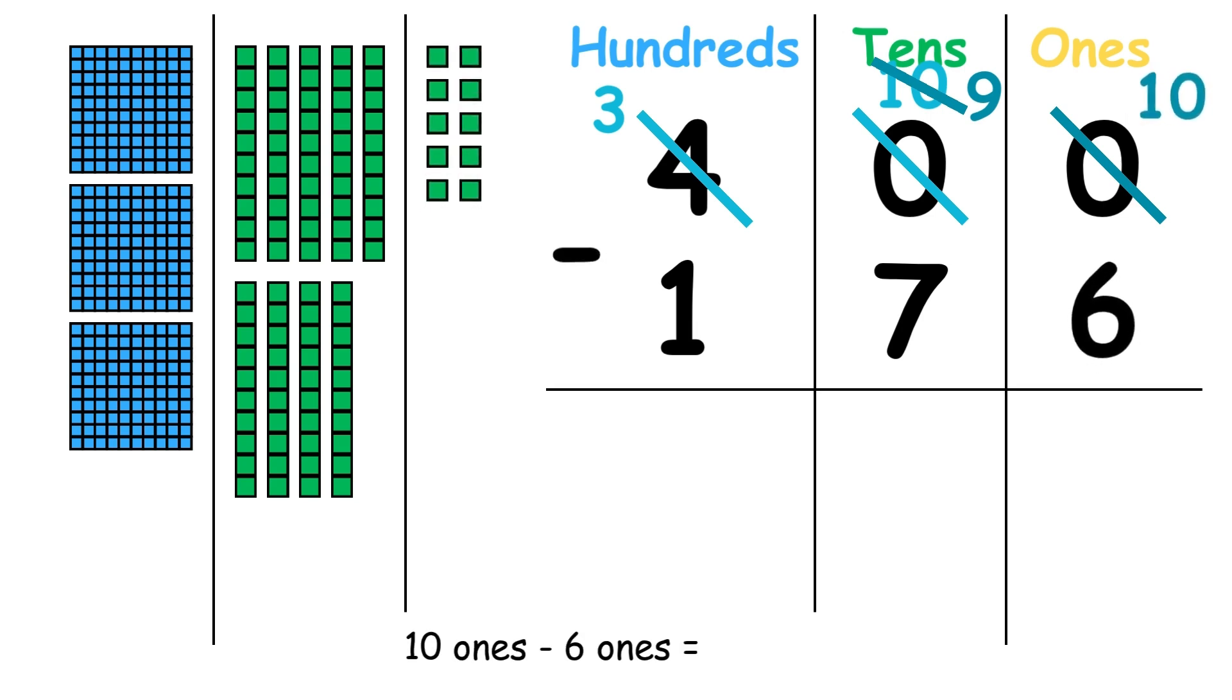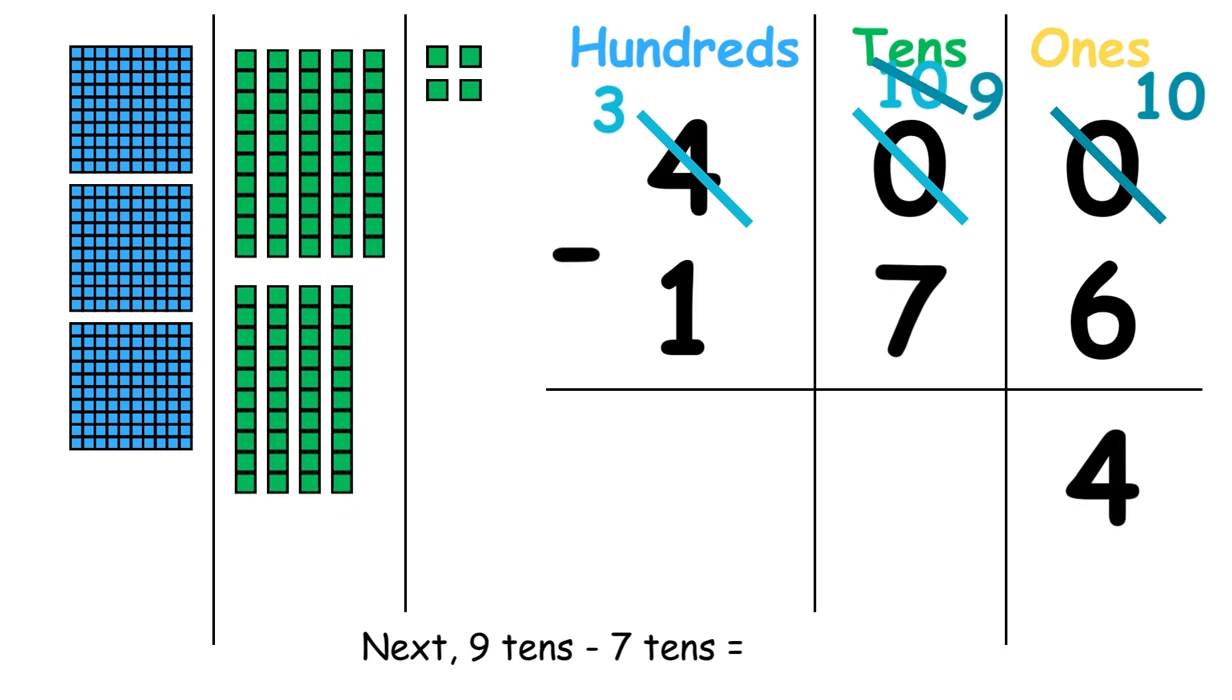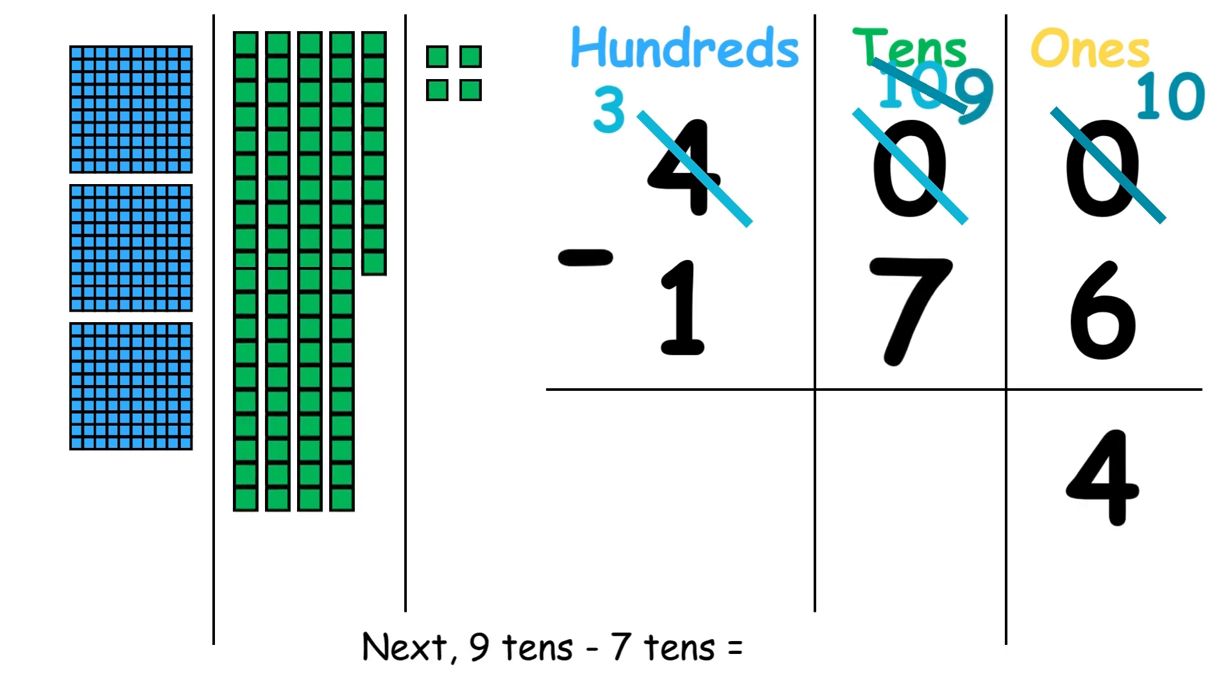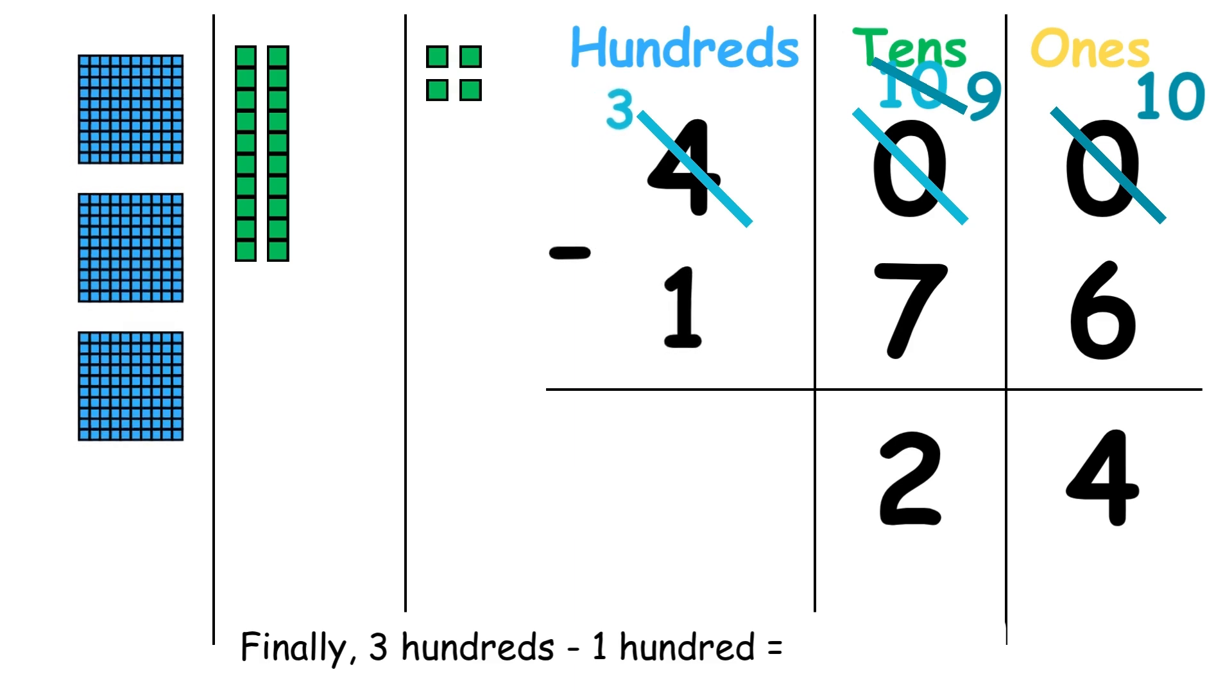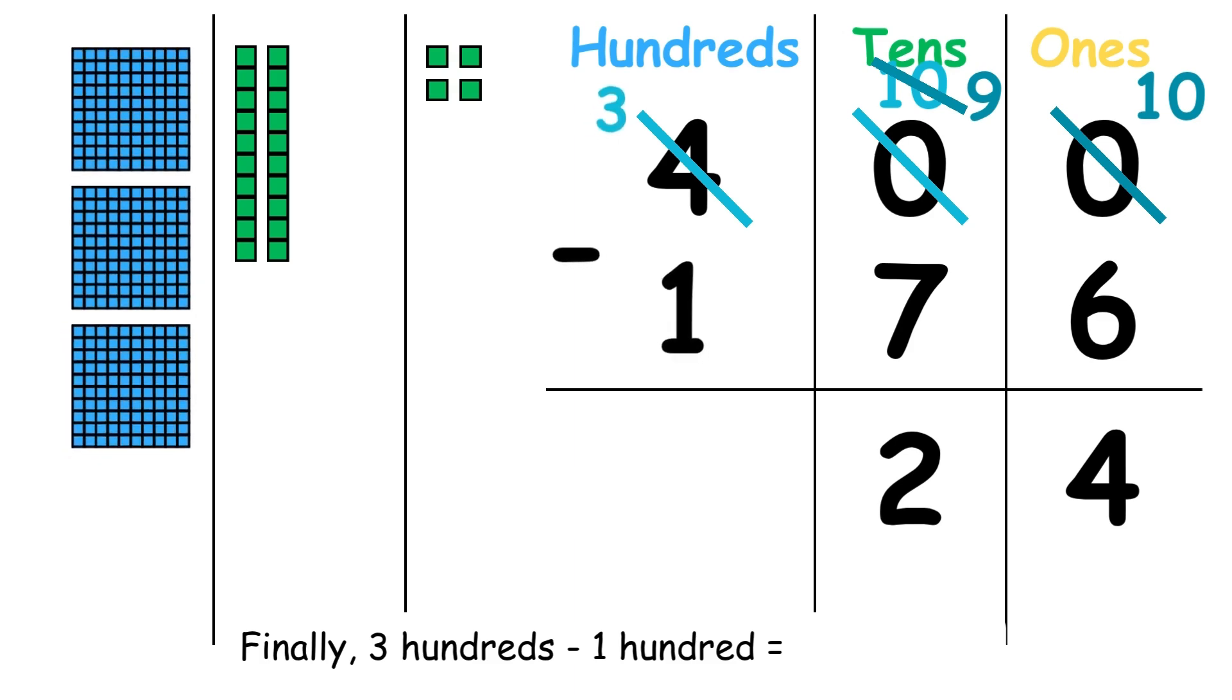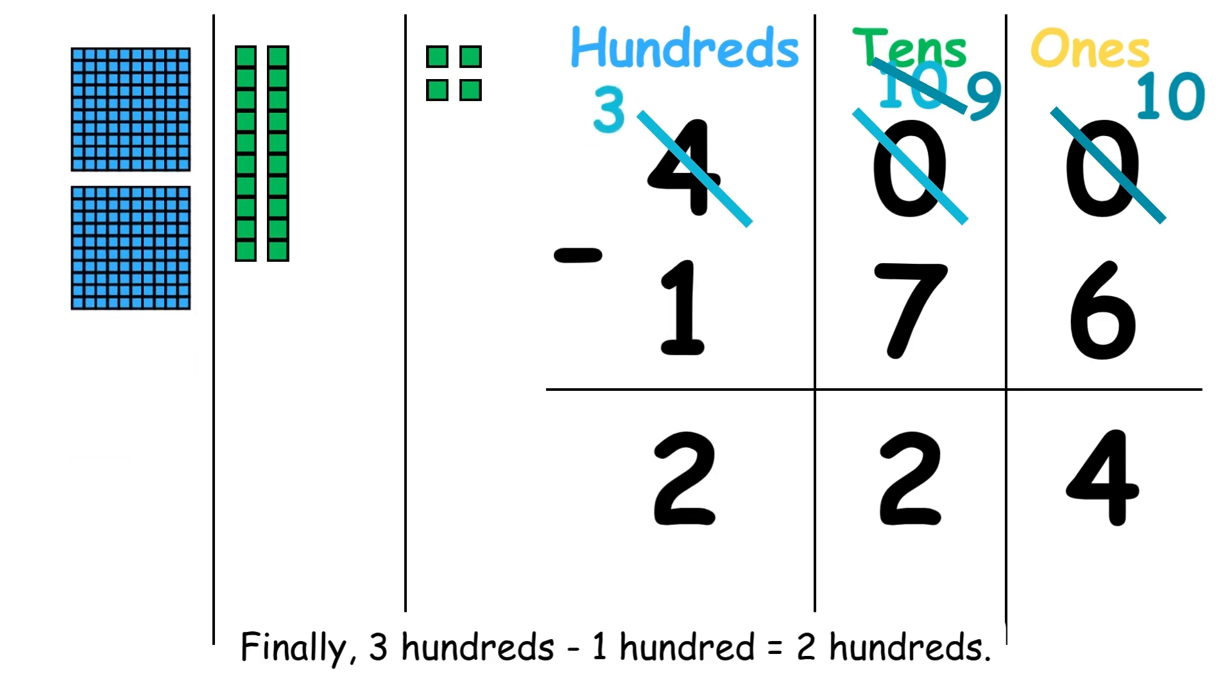10 ones minus 6 ones equals 4 ones. Next, 9 tens minus 7 tens equals 2 tens. Finally, 3 hundreds minus 1 hundred equals 2 hundreds.